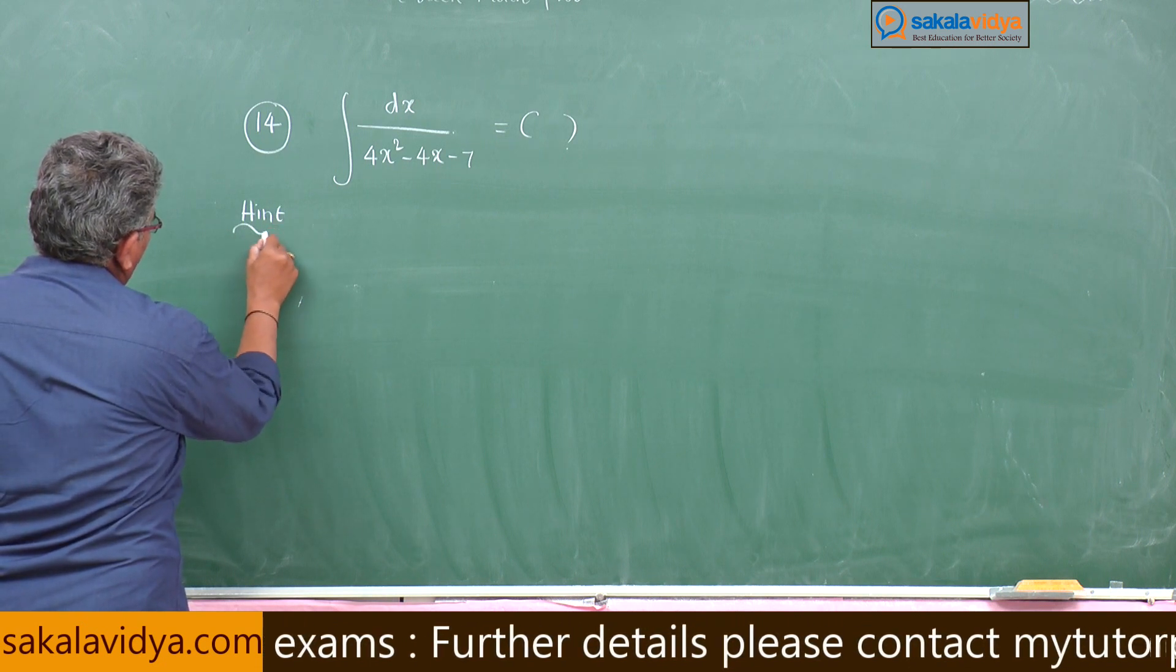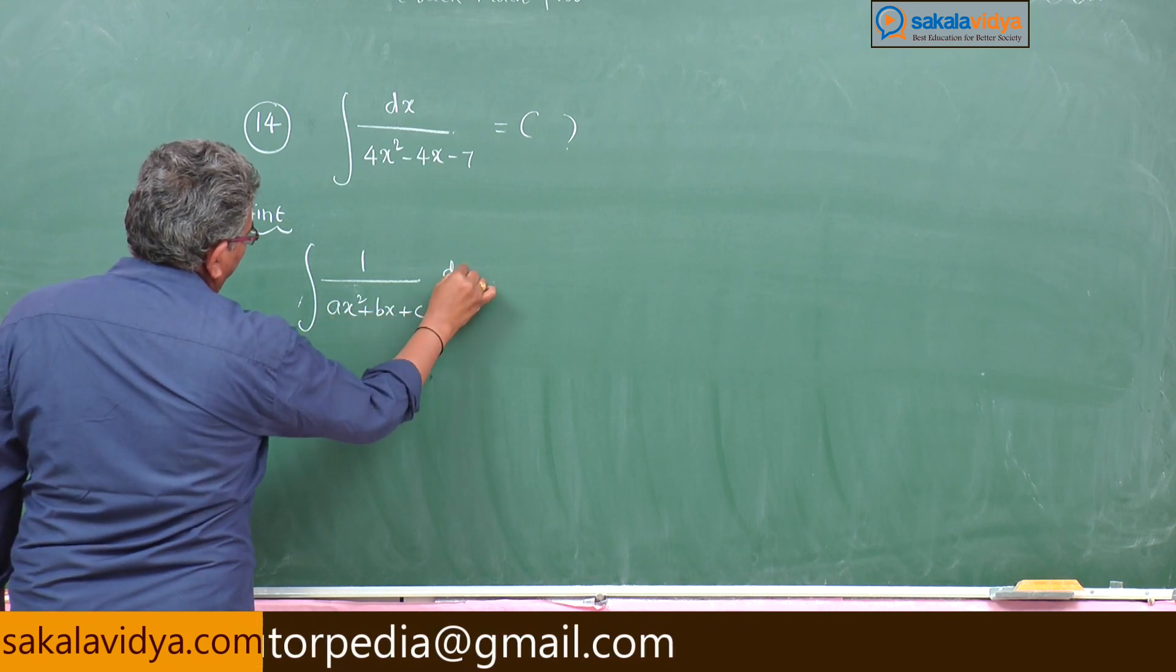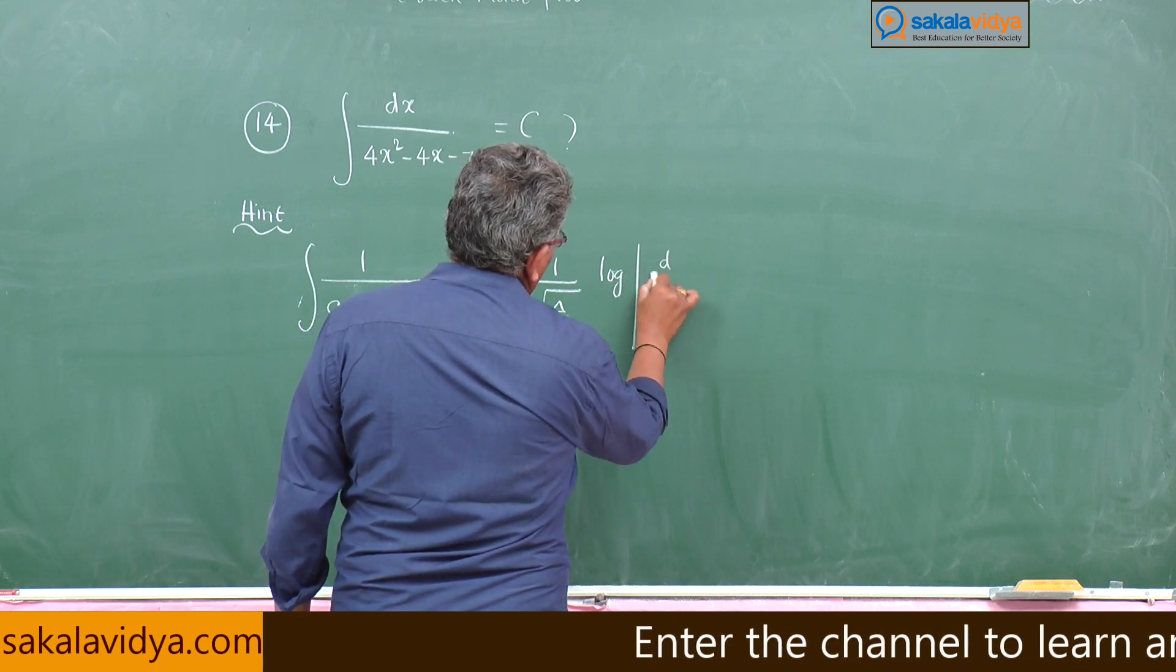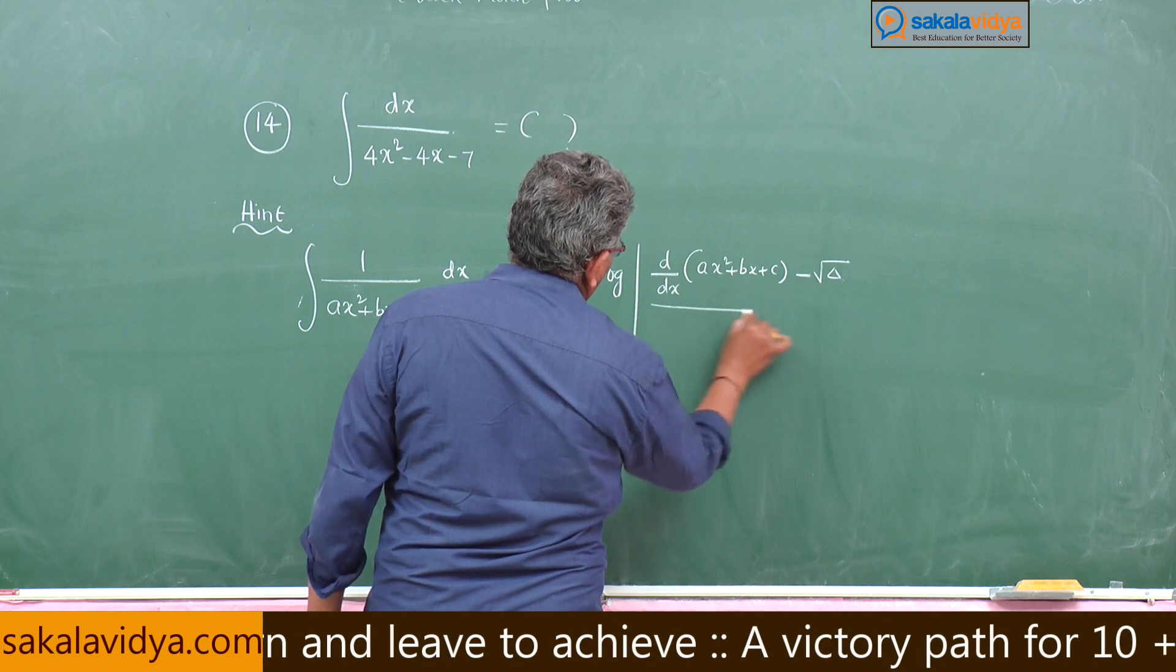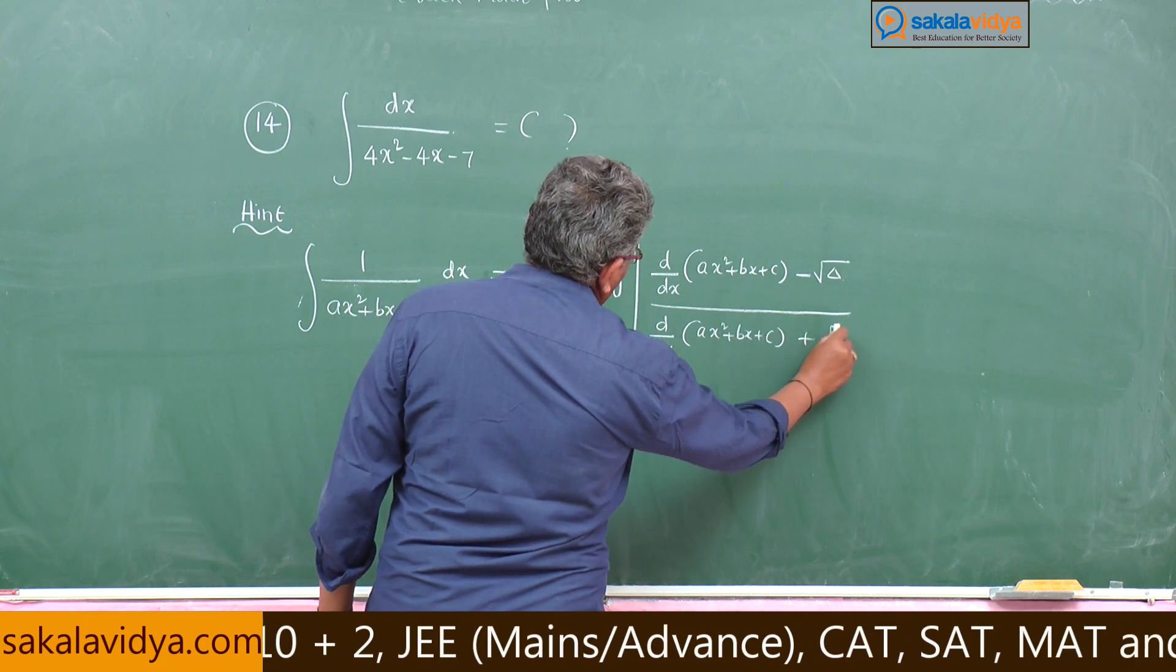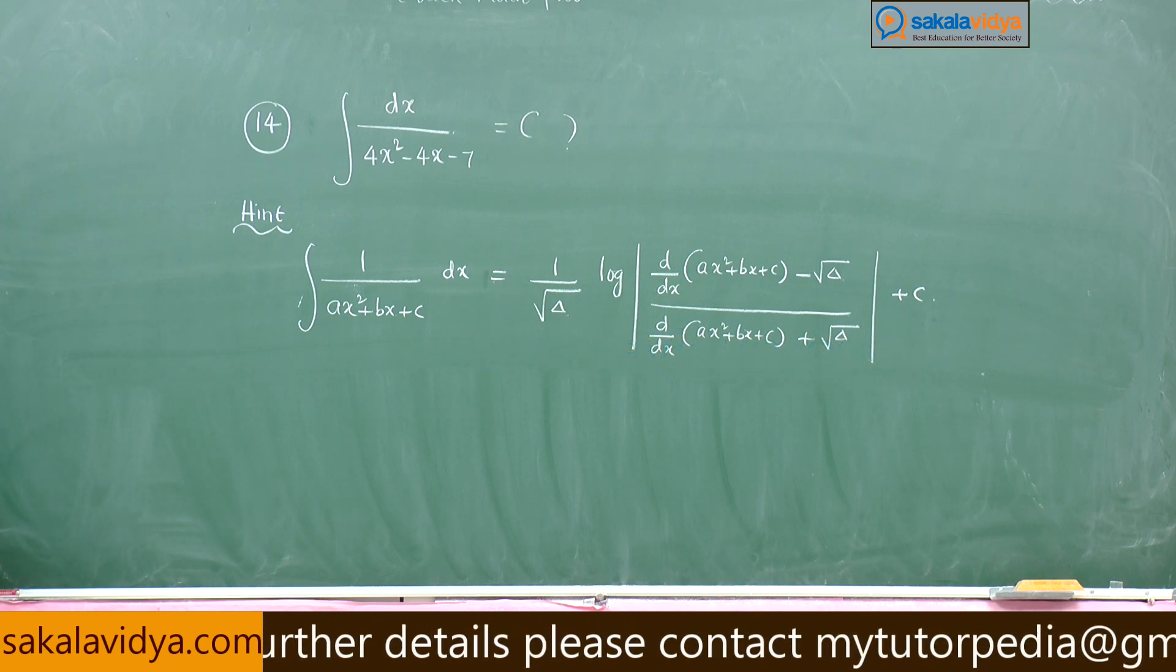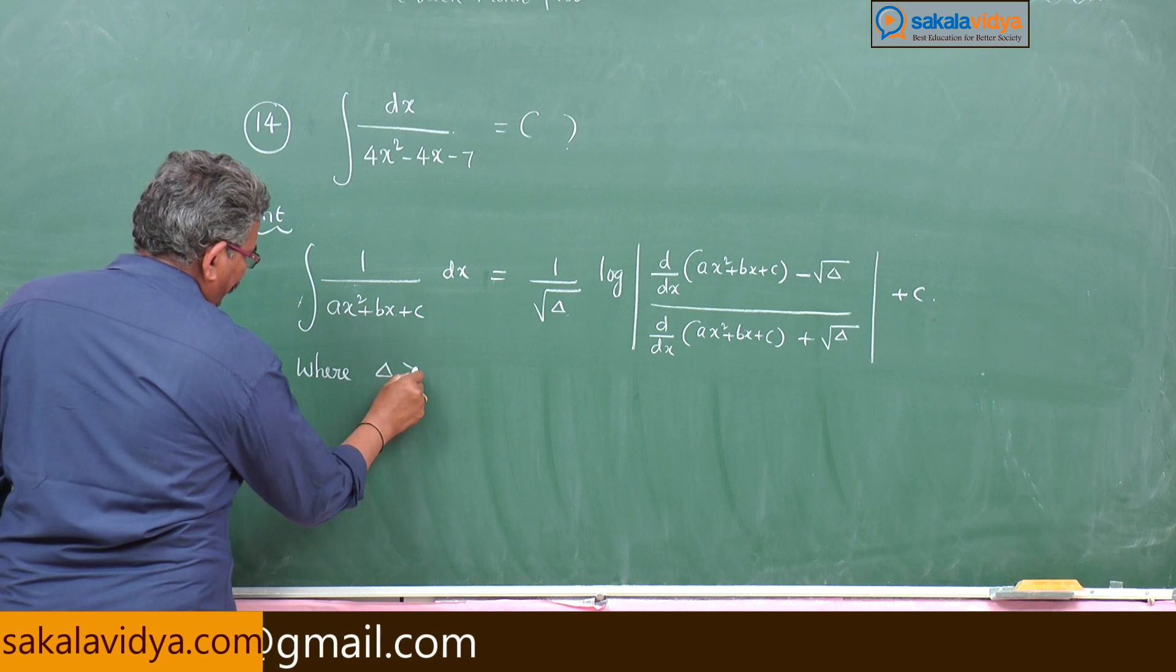Hint: integral 1 by a x square plus b x plus c d x is equal to 1 by root delta log mod d by d x of a x square plus b x plus c minus root delta by d by d x of a x square plus b x plus c plus root delta plus constant of integration. Just go through this formula. Have you checked? Where delta greater than 0.